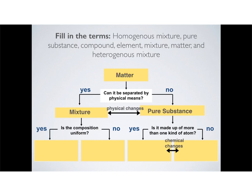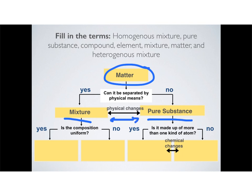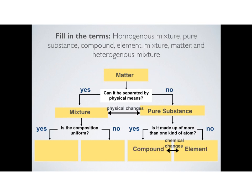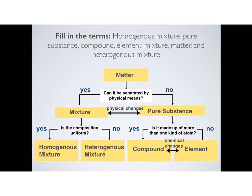You should have a chart for classifying matter. The broad category starts with the question: can it be separated by physical means? If yes, it's a mixture; if no, it's a pure substance. Mixtures can be physically separated into pure substances, and pure substances can be combined to make mixtures. For pure substances, the next question is: is it made up of more than one kind of atom? If yes, it's a compound; if no, it's an element. Compounds and elements can be interconverted through chemical changes. For mixtures: is the composition uniform? If yes, it's homogeneous; if no, it's heterogeneous.